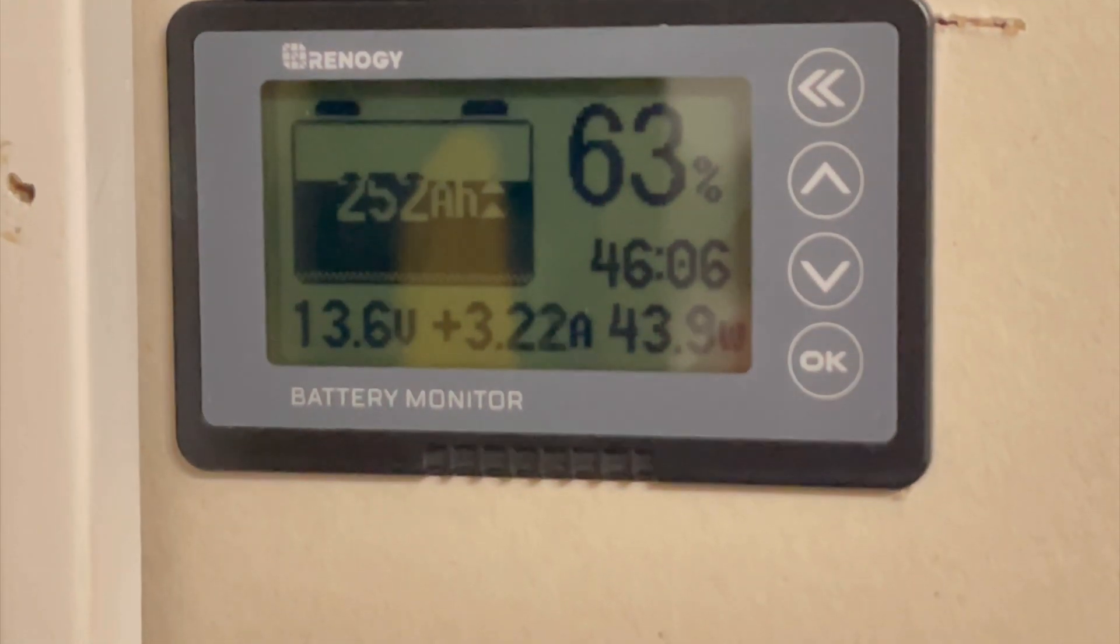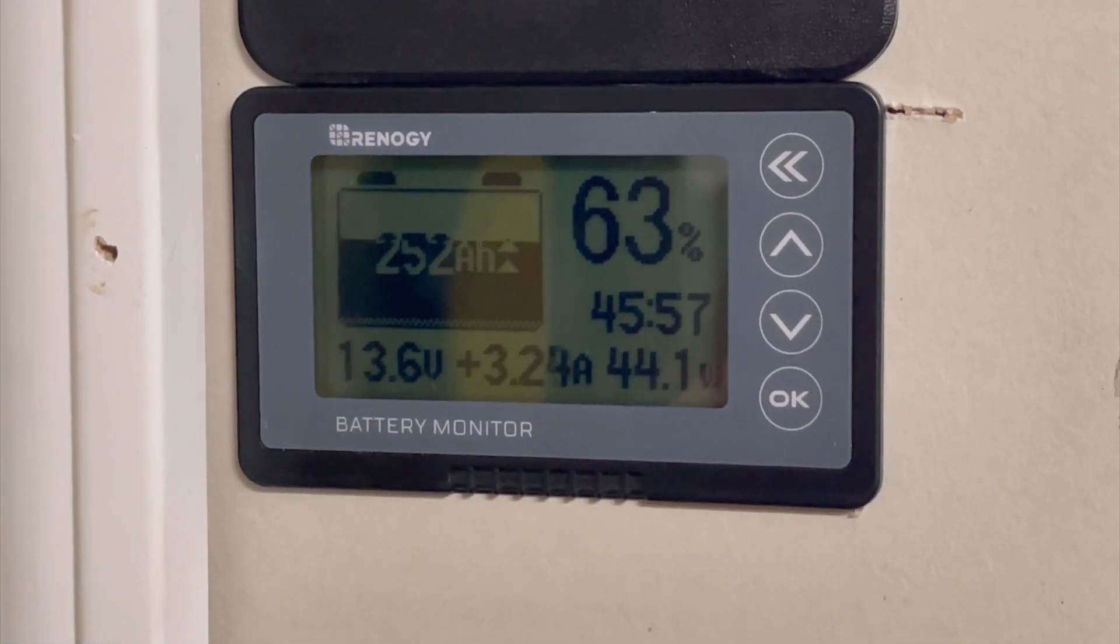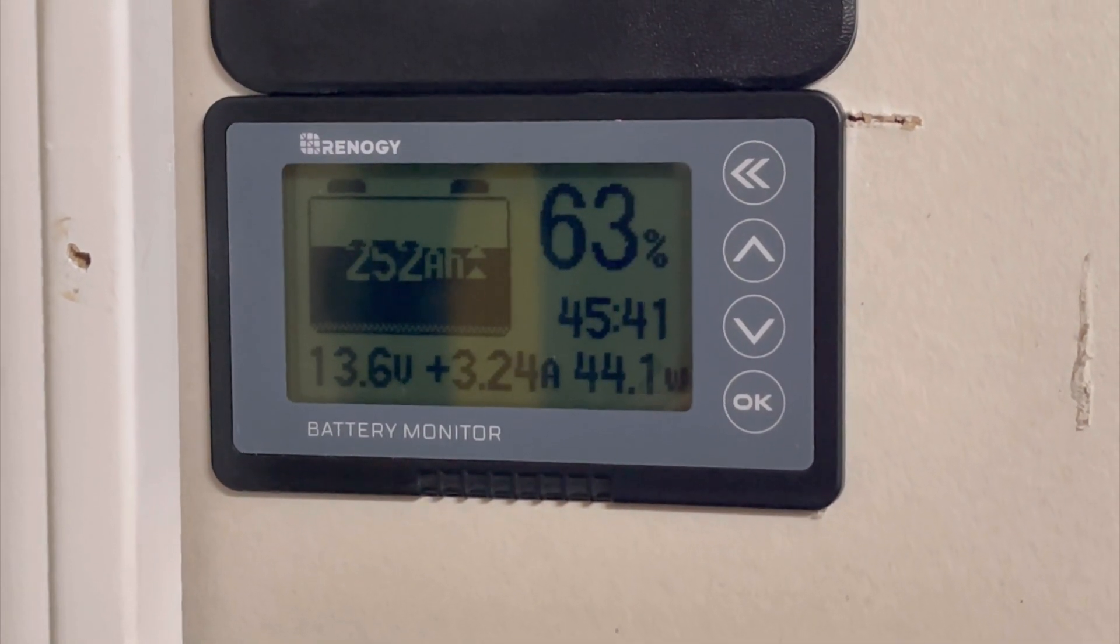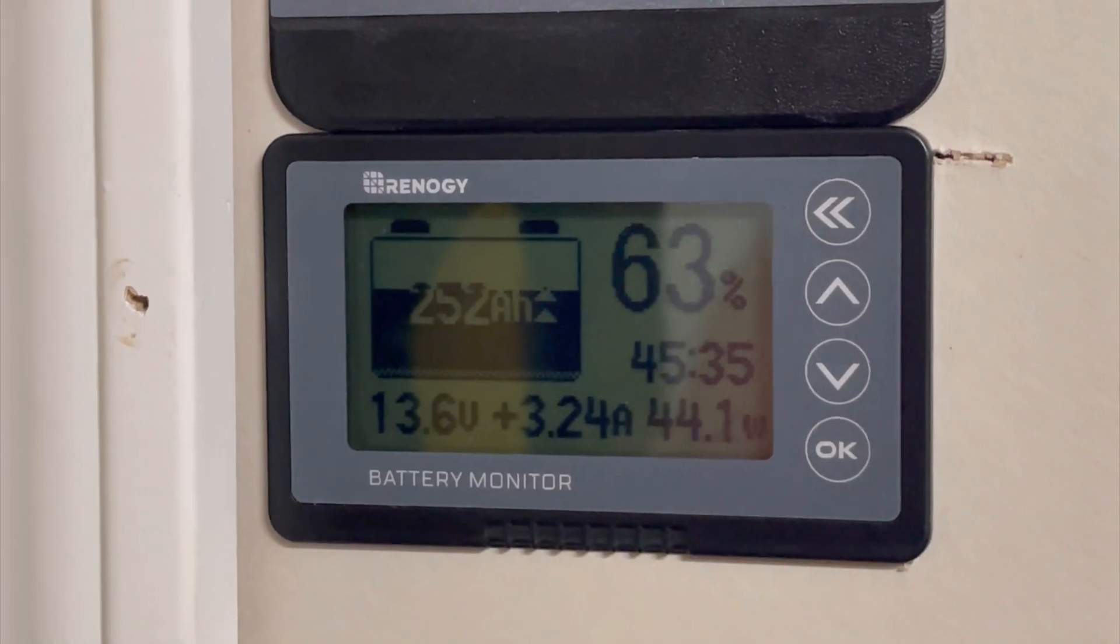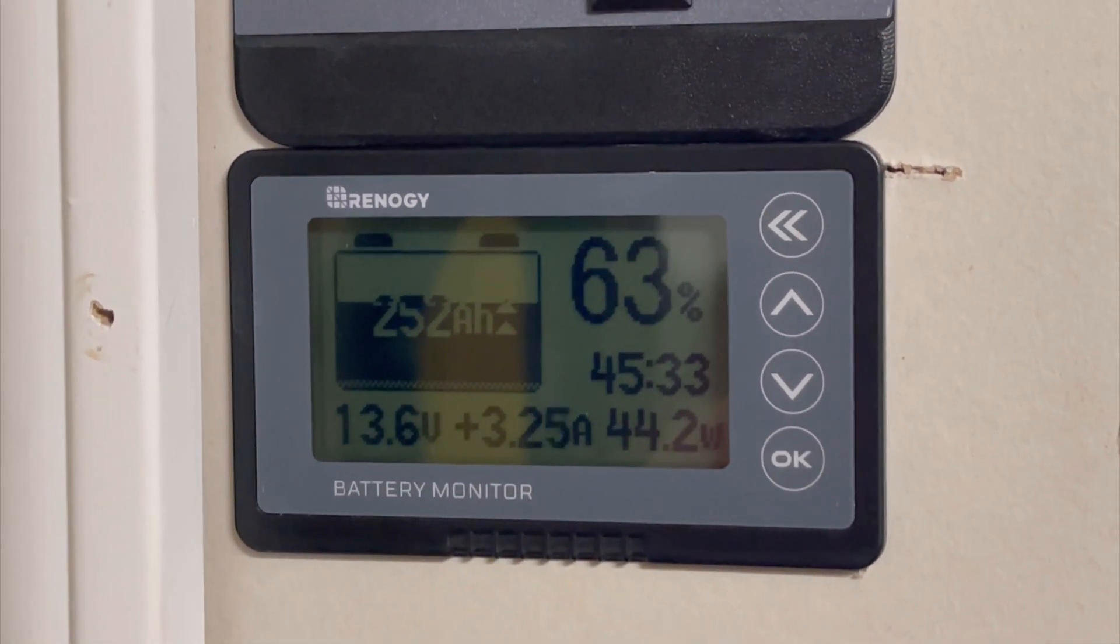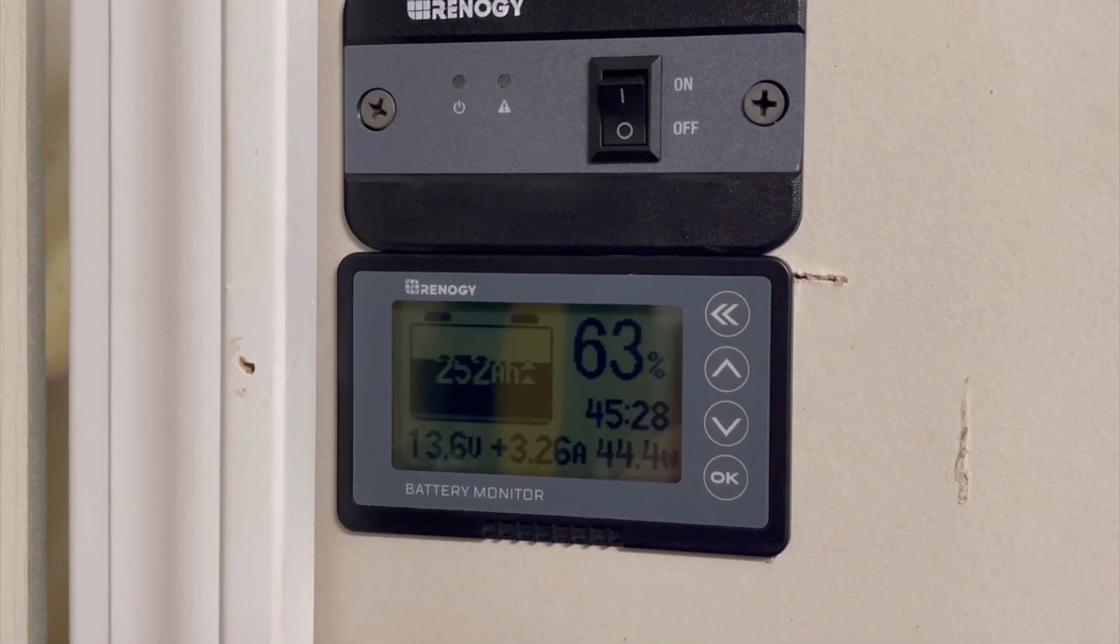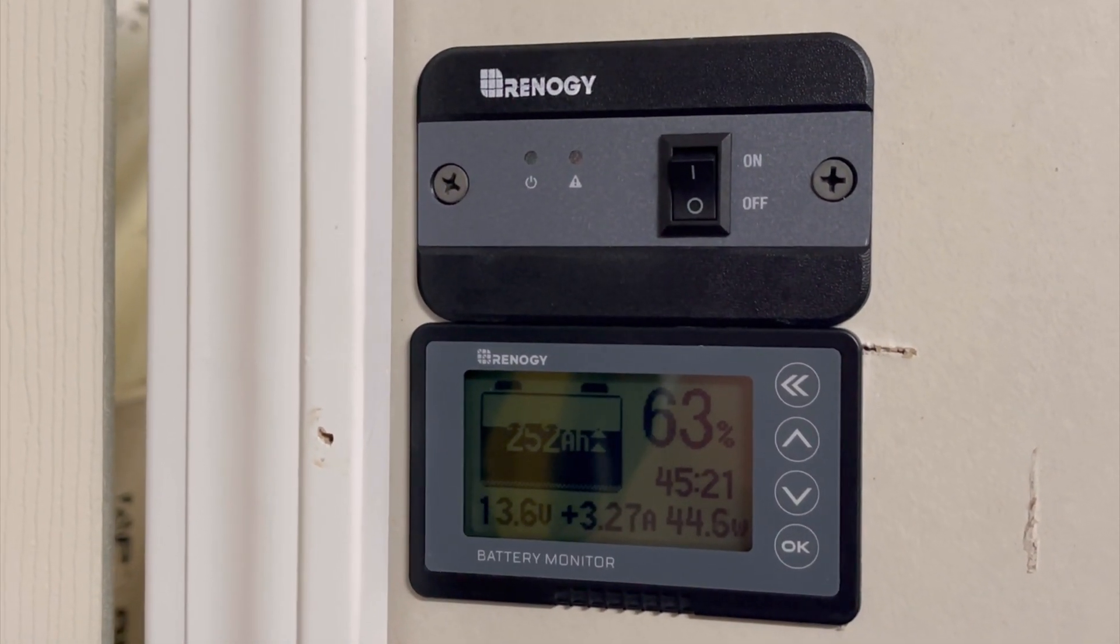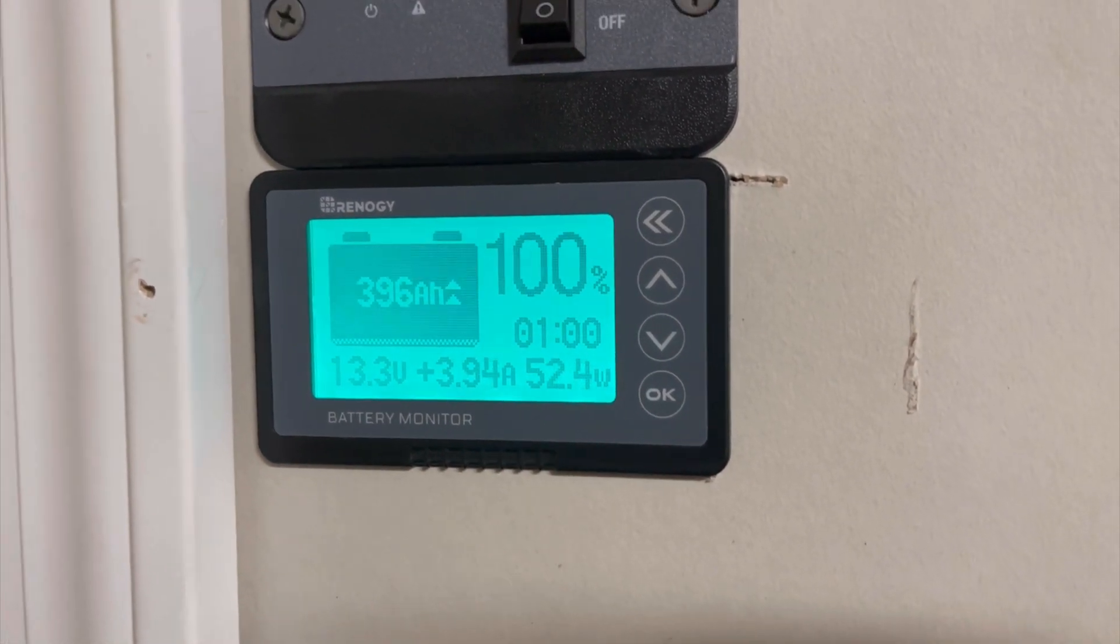There it is, we are bringing in right around 3.2 amps, 40 watts. We are back in business, the solar system is up and running. Small problem after three years, not a big deal. Just get a multimeter and it's very easy to diagnose your problems and keep your system running. We'll update you guys if anything else fails.